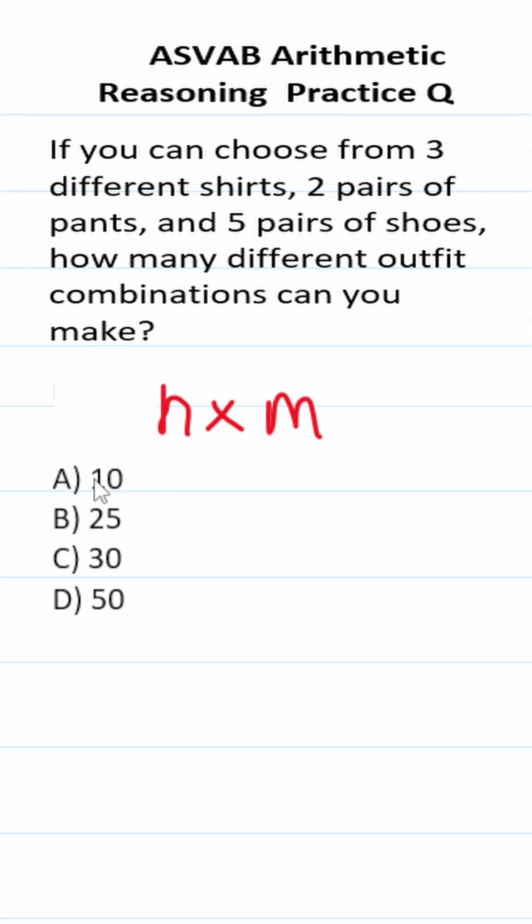The same principle applies here. We have three different shirts from which we can choose times two different pairs of pants that we can choose times five different pairs of shoes. By multiplying these together, we'll know how many different outfit combinations we can make.